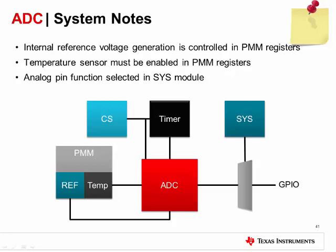If you use the internal reference or the temp sensor, these have to be enabled in the PMM module. Then there are the normal ADC settings like sampling time and channel, which would be set up in the ADC module itself. You also need to have your clock system set up for the clock you want to use as your ADC clock source. If you're triggering from a hardware trigger, like a timer, you'll need to set up the timer as well.